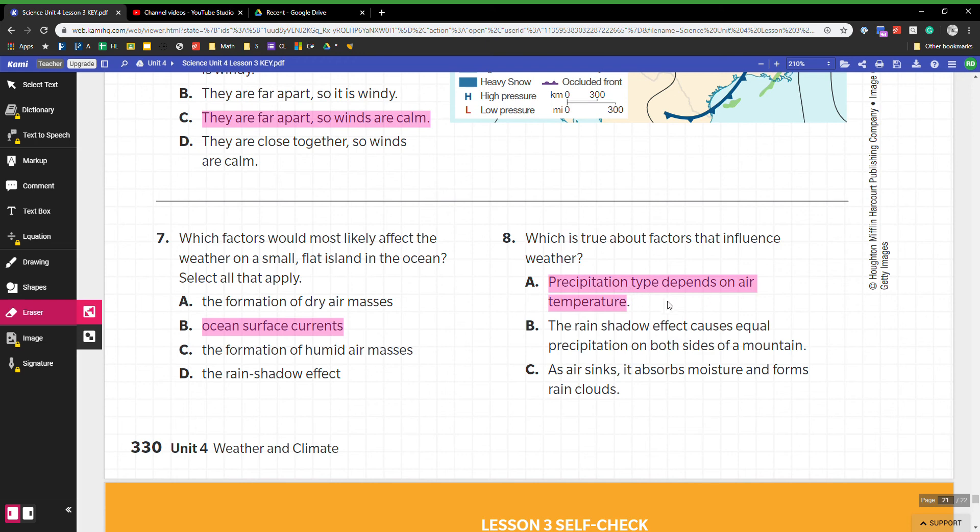What is true about factors that influence weather? Precipitation depends on air temperature. The rain shadow effect causes equal precipitation on both sides of the mountain—that's false. The rain shadow effect, the whole idea is the air goes up and over the mountain. You have a mountain here, it's green on this side and it's dry on this side, and so it creates this where one side of the mountain looks different, is darker than the other side. That's the shadow—the rain, the shadow it casts is supposed to be like the greenery. As air sinks it absorbs moisture and forms air clouds—that is not true. As air sinks it does not form rain clouds. Usually when it rises it's forming rain clouds because temperatures are dropping.